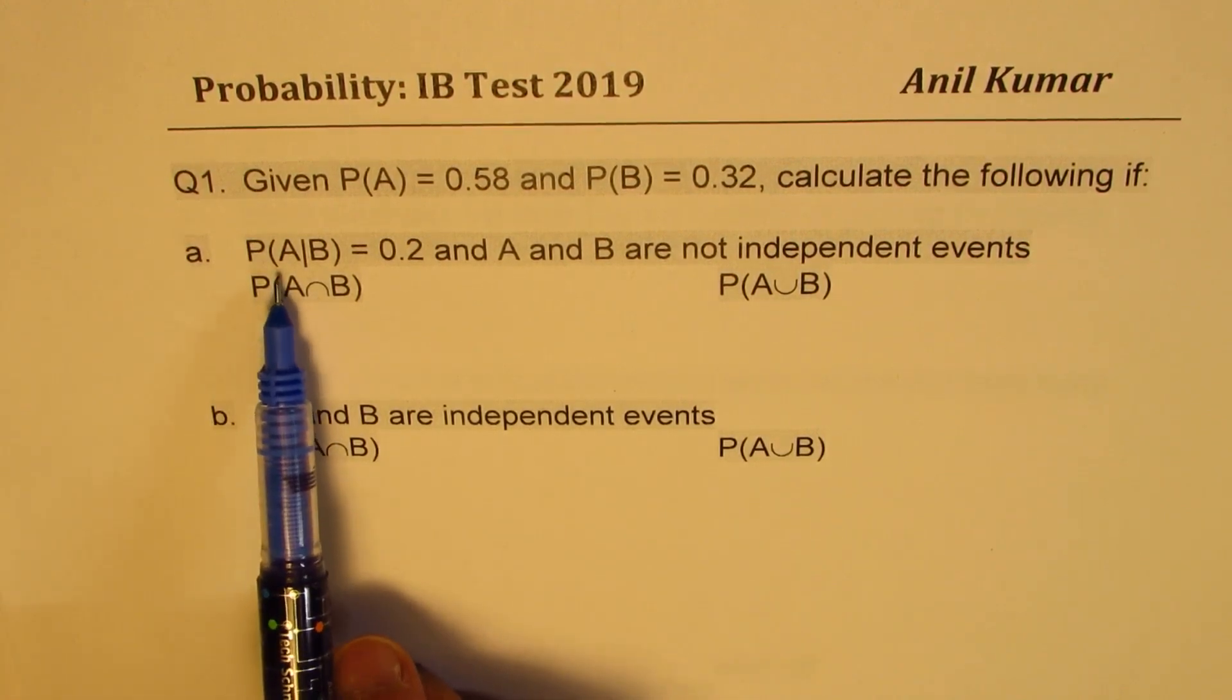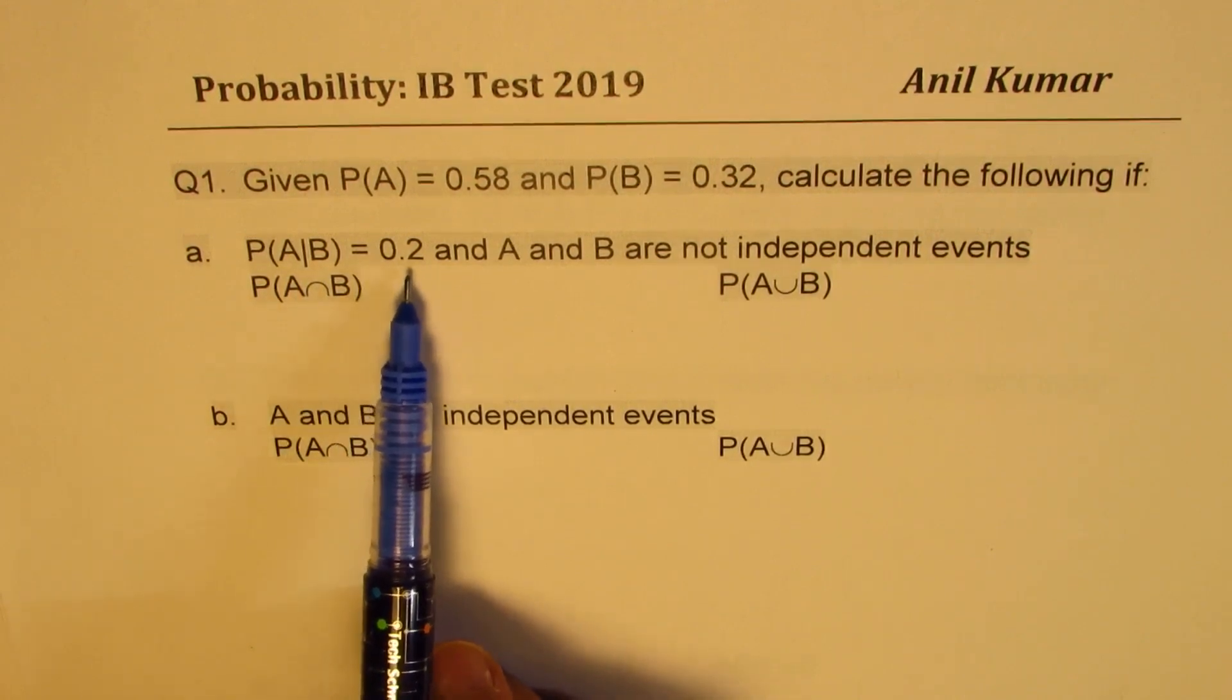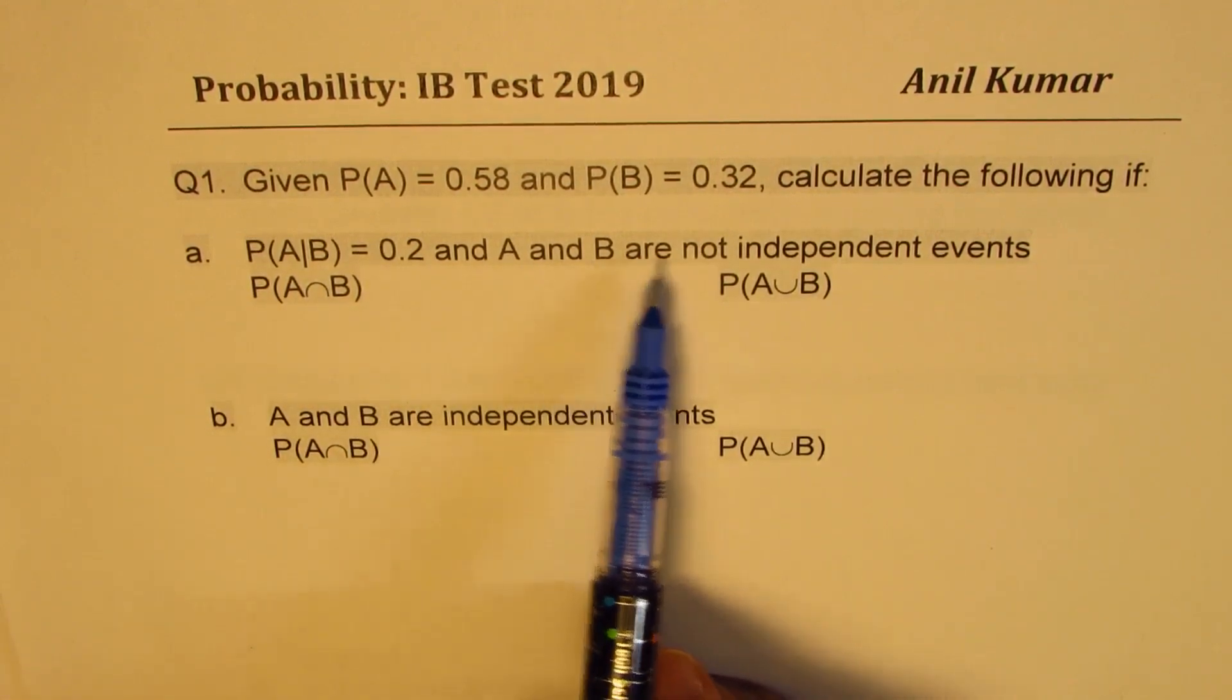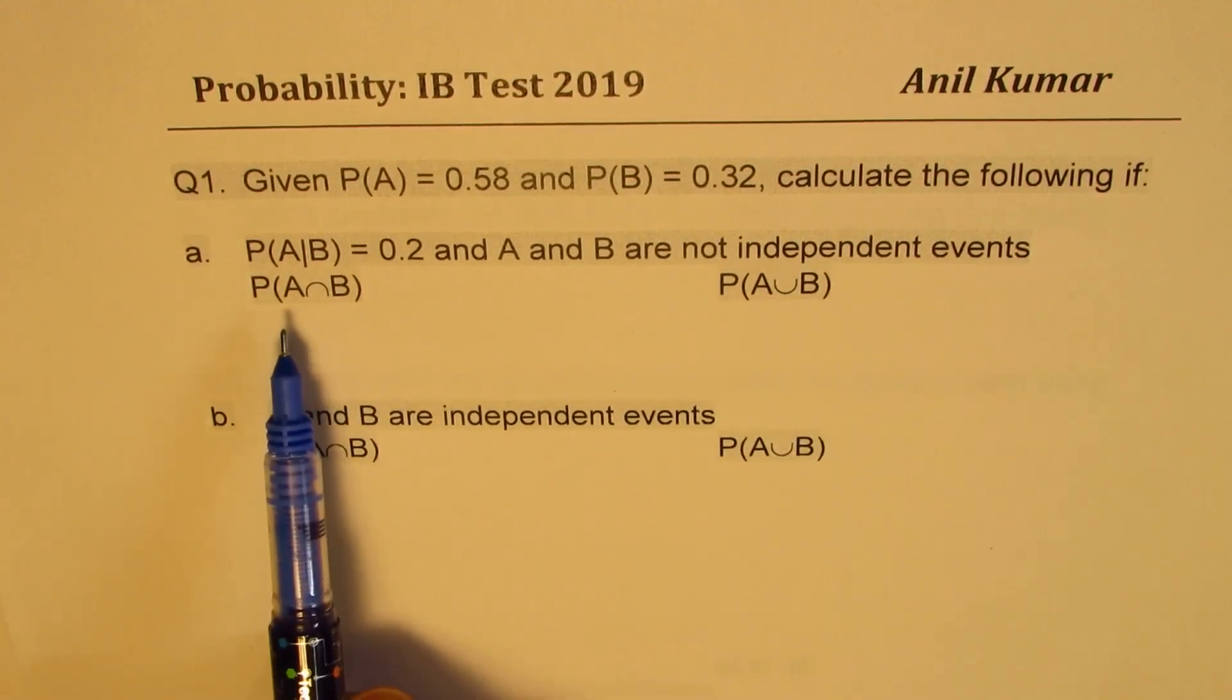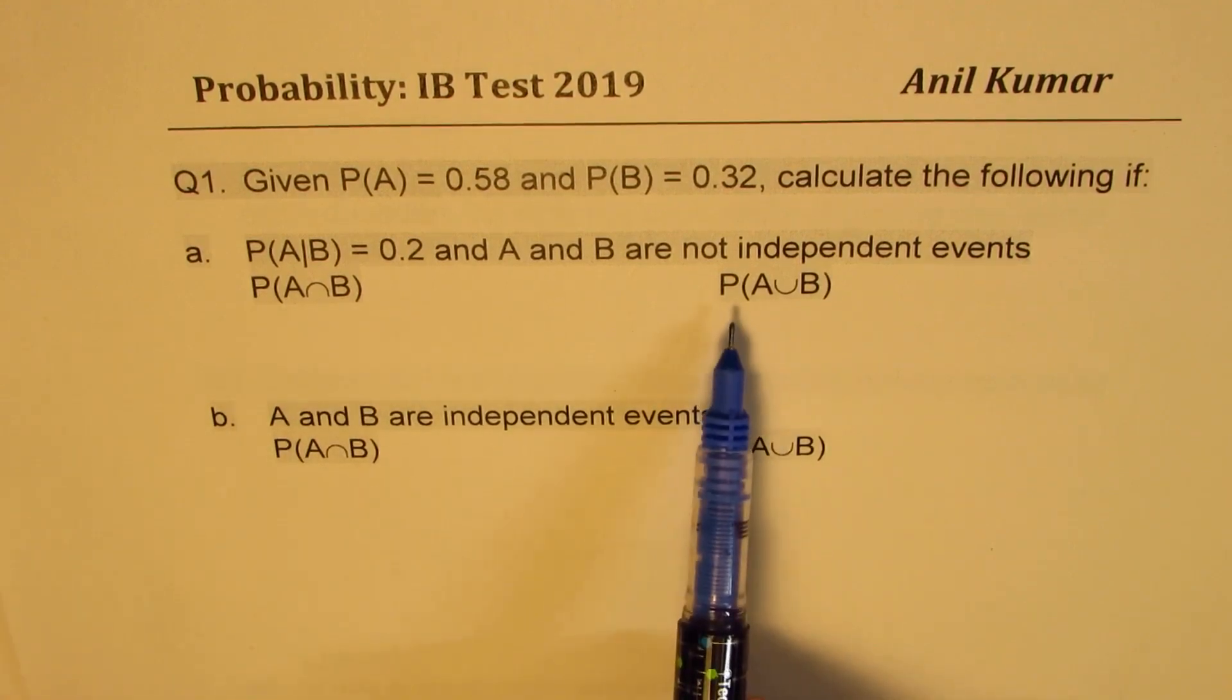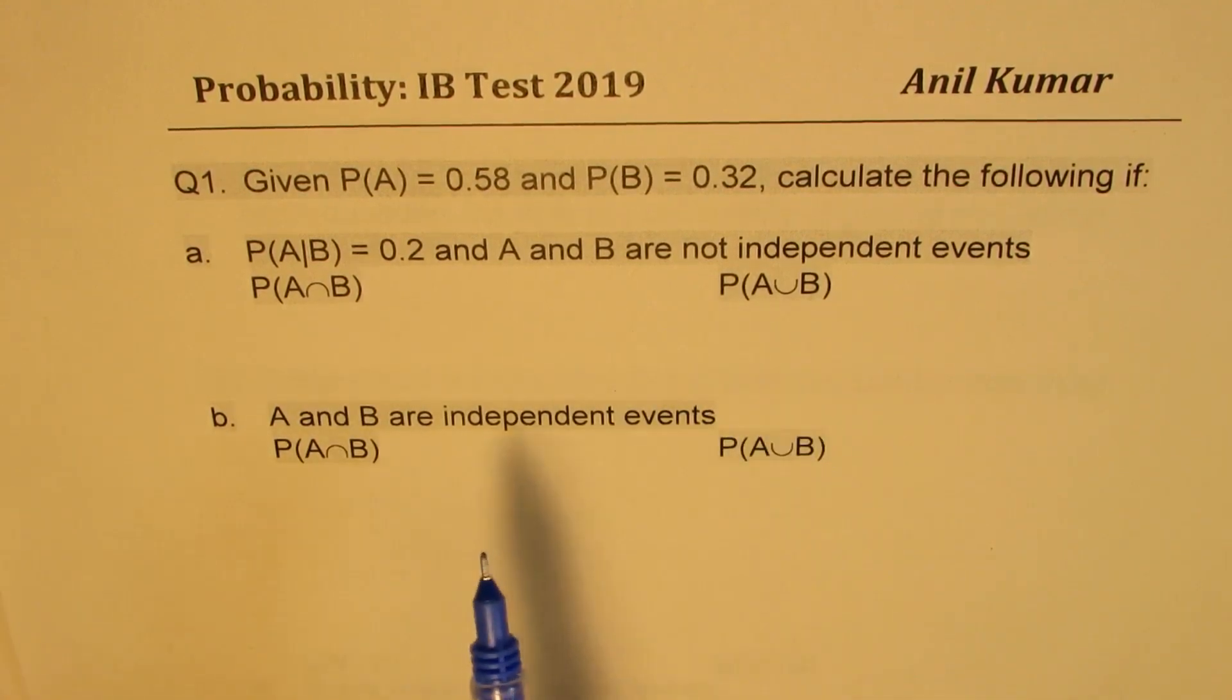Part A: probability of A given B is 0.2 and A and B are not independent events. In that case, we need to find probability of A and B and probability of A or B.